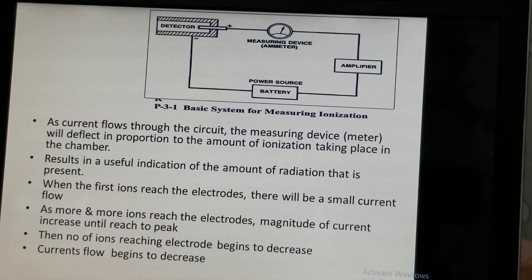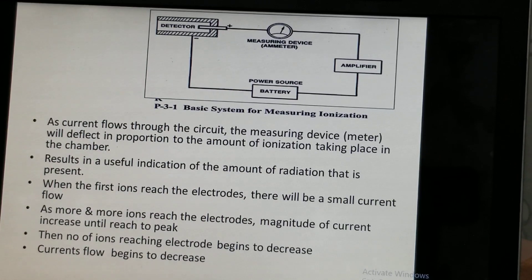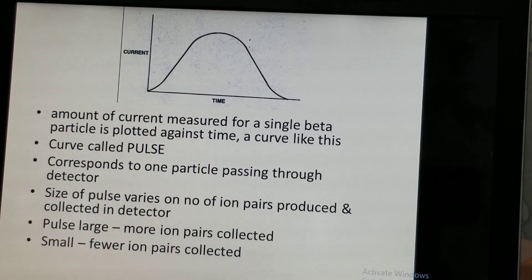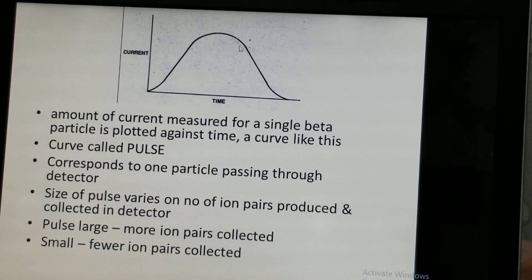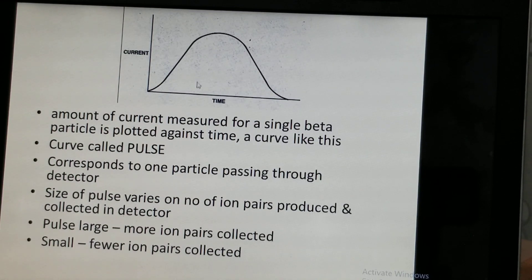As more and more ions reach the electrodes, the magnitude of the current increases until it reaches a peak. Once the current reaches its peak, the number of ions reaching the electrodes begins to decrease, and the current also begins to decrease. This rise and fall forms a curve called a pulse. The total current measured for a single particle plotted against time produces a curve called a pulse.